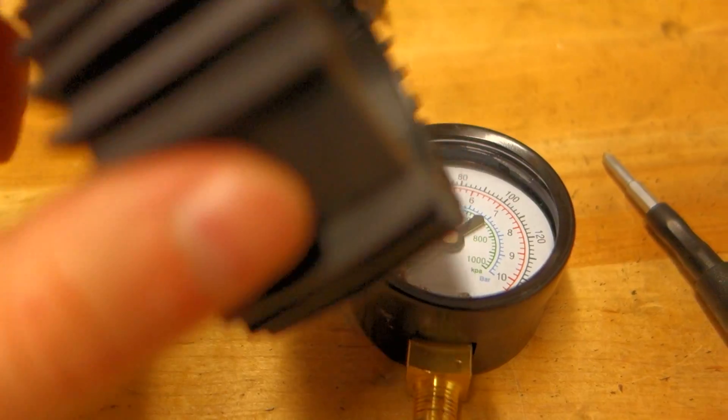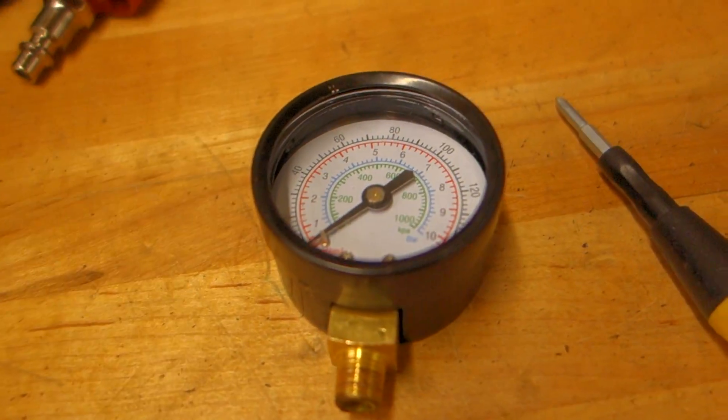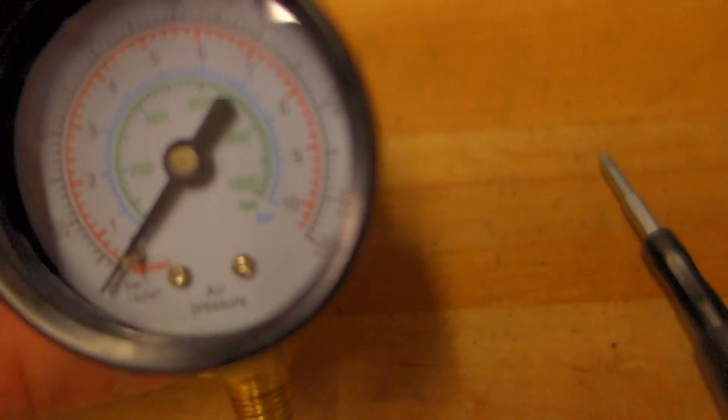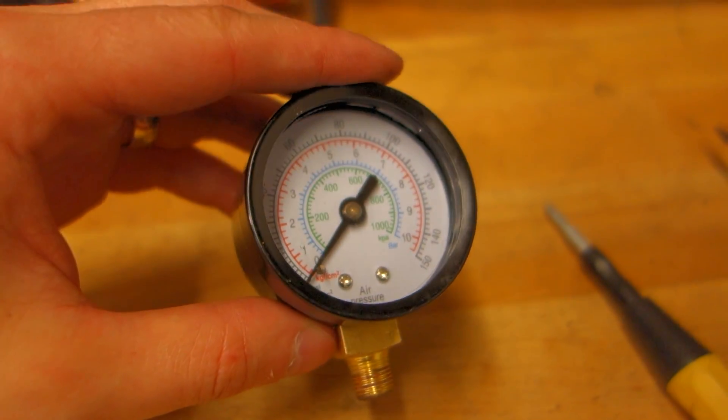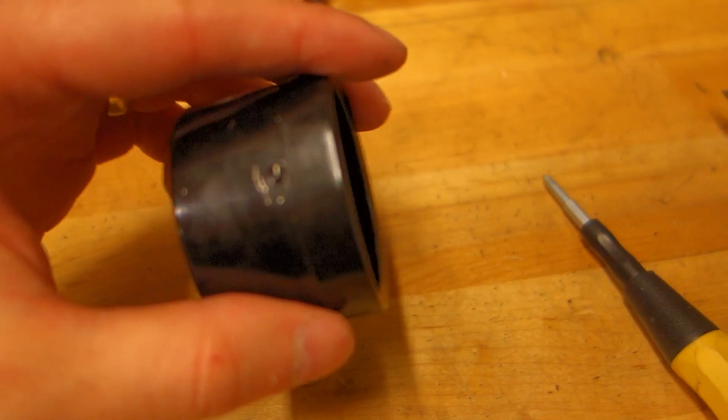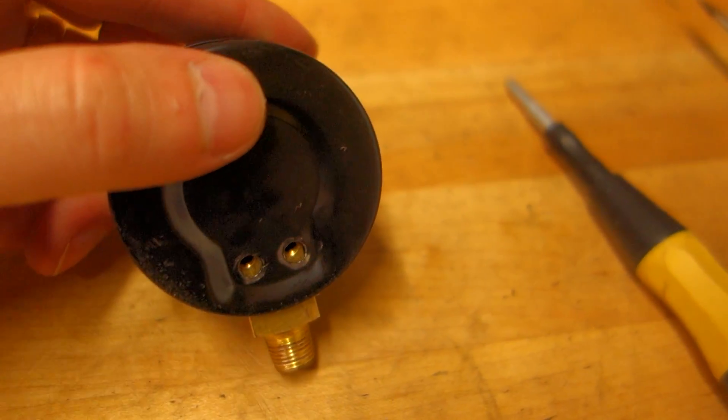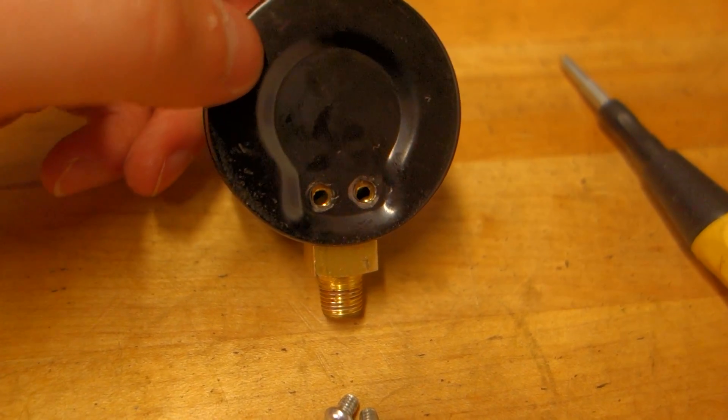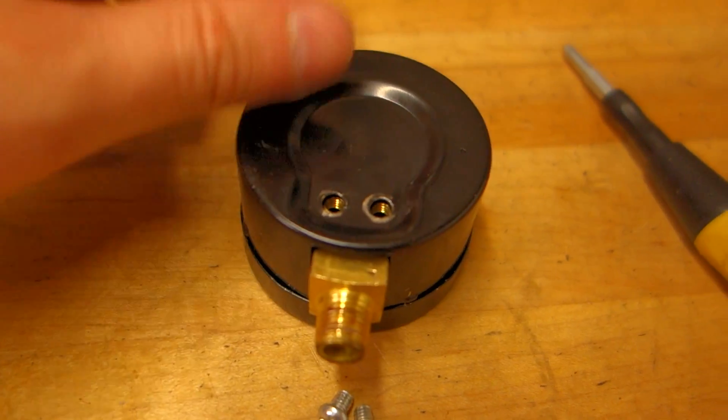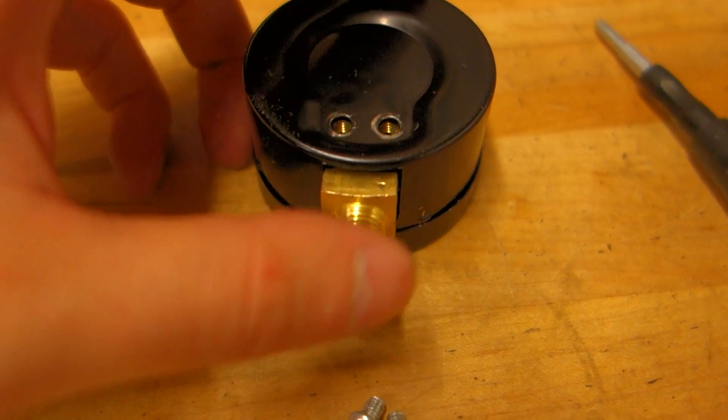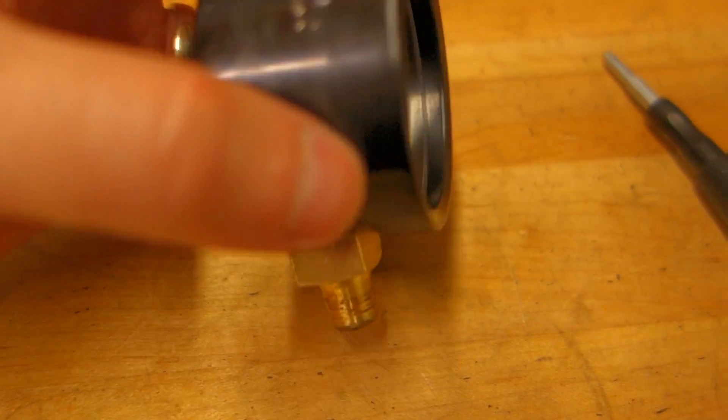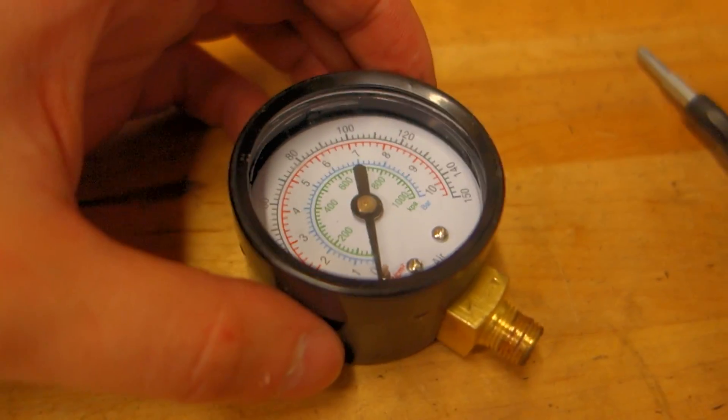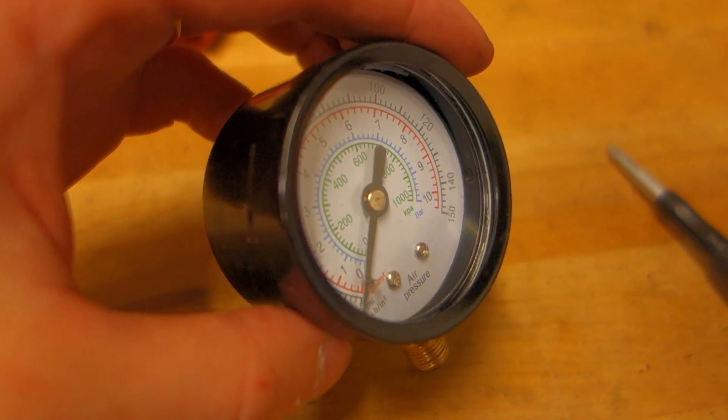I took off this rubber boot and you get this gauge that's half taken apart right now. There's two screws on the back here that you take off and then this whole mechanism in here is loose. Then you have to take the bezel off and the front glass that the bezel is holding in.